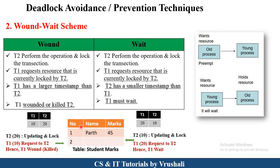Next is the wound-wait scheme. Let's understand what exactly 'wound' means. This is the student marks table. The timestamp of T1 is 10 and timestamp of T2 is 20, so T2 is the younger transaction and T1 is the older transaction. T2 updates the record in the student marks table and locks the transaction, meaning no one can update the record at the same time. But T1 (older transaction) requests T2 — it also wants to update the same record. When an older transaction requests a younger transaction, the older transaction (T1) gets wound — they kill that transaction. So the newer transaction performs the operation first and T1 is killed, preventing a deadlock.